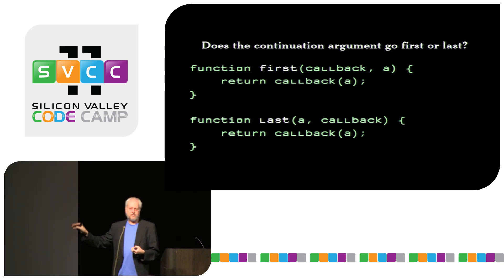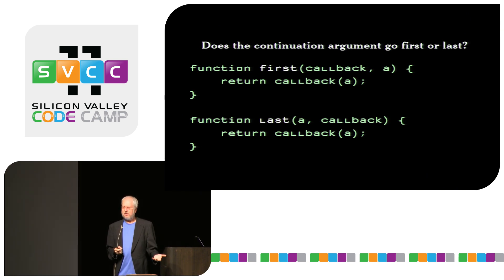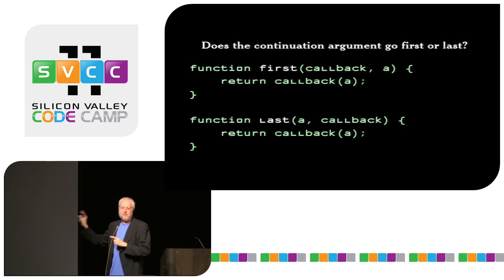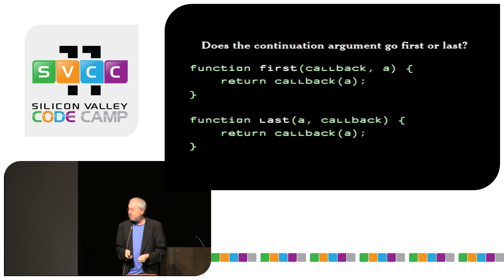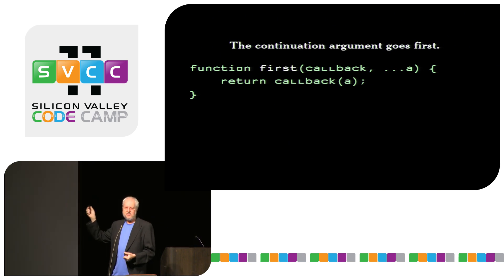I recommend we solve this by just picking one. It's similar to courts — sometimes the court reaches the wrong decision, and courts do that all the time, but we tolerate it because even a decision against you is better than drawing swords and fighting to the death. In this case, I think one is definitely better than the other: the callback should be in the first position. The reason is that in ES6 we added the ellipsis operator so functions can take a variable number of arguments, and that operator only works in the final position. So if you're going to have a callback, it should be first.